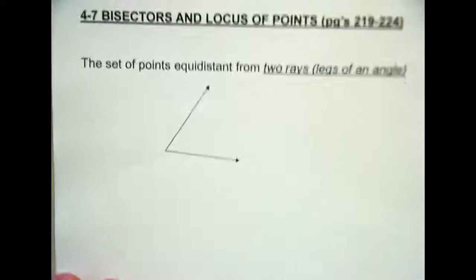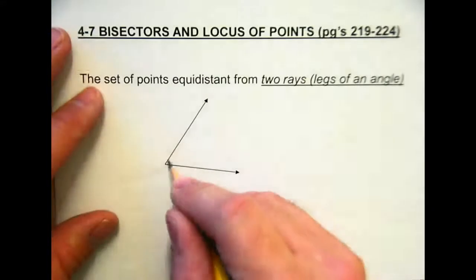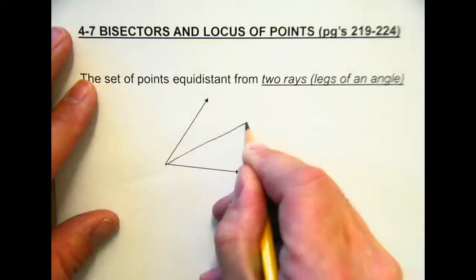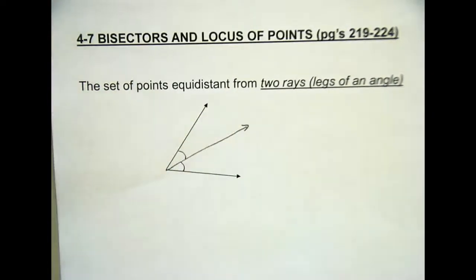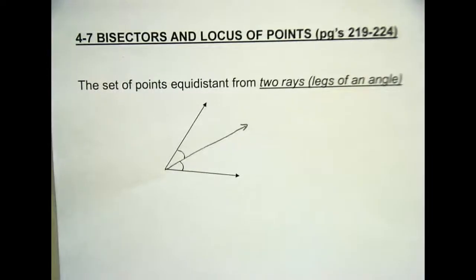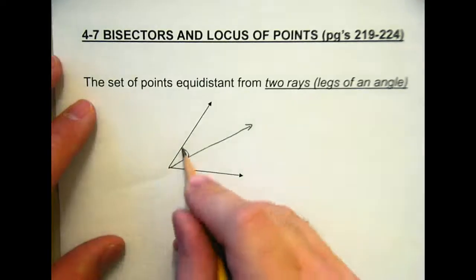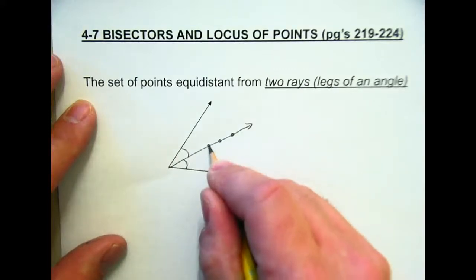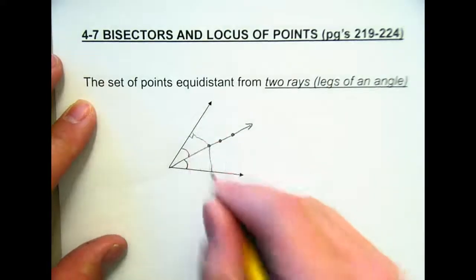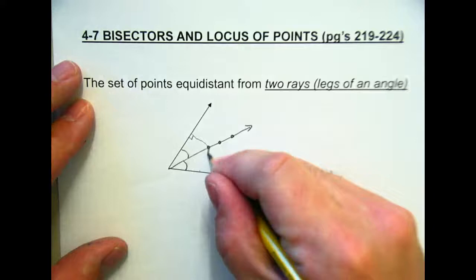We're on our angle now. Isn't it like an angle bisector? A set of points equidistant from two rays or the legs of an angle — yes, that would be an angle bisector. The angles would have to be the same. Any point that's on this line is equidistant, so this point would be equidistant to that and to that, hitting at a right angle. Any point that would lie on that angle bisector — these lengths would be equal if they cross at right angles.